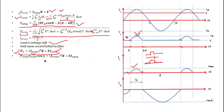Since the diode is ideal with no losses, input power equals VS rms times IS rms times the power factor cos(φ), which equals the output power expression. By equating input and output power, we can calculate the power factor cos(φ).